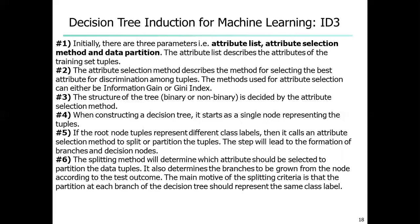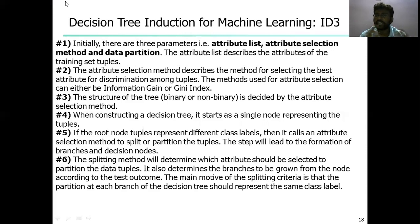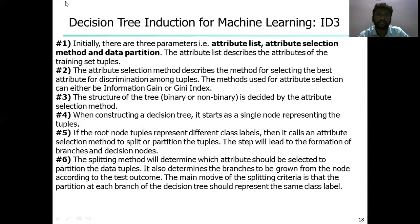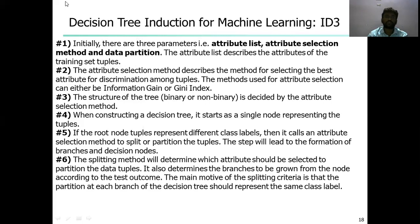The splitting step determines which attribute should be selected to partition the data tuples, determines which branches to grow, which branches provide better outcomes, and which branch will give a useful test outcome — either a good factor or bad factor. The main motive of the splitting criteria is that the partition of each branch should represent the class label very clearly — the same class label. The same class labels used in the upper node selections will be followed in the next level as well.